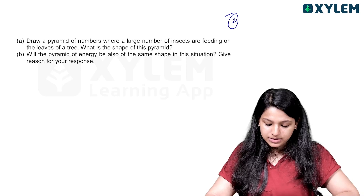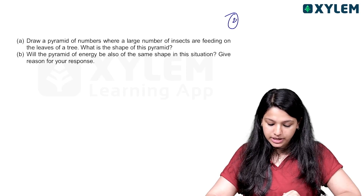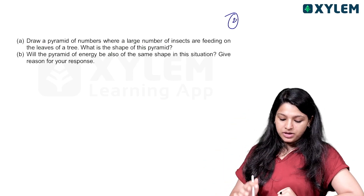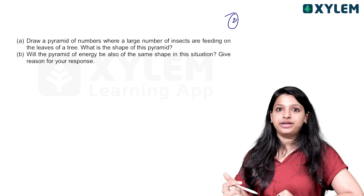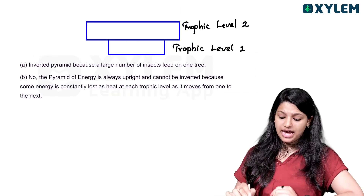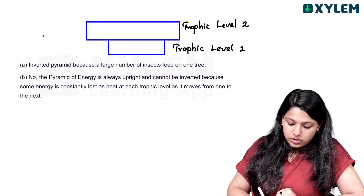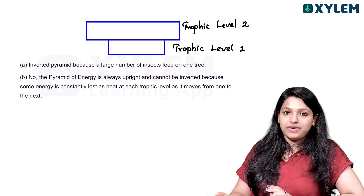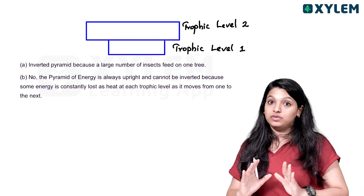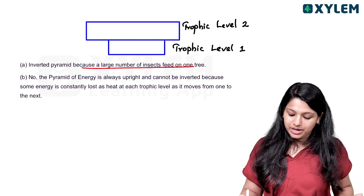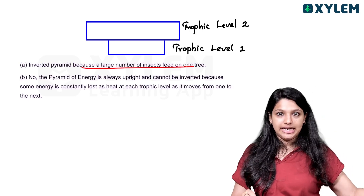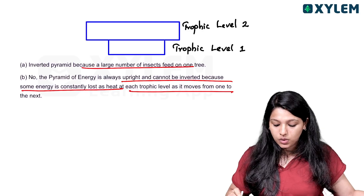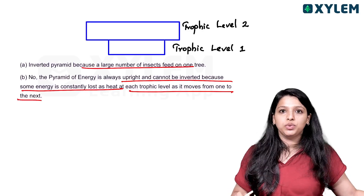Draw a pyramid of numbers where a large number of insects are feeding on the leaves of a tree. This forms an inverted pyramid because the insects outnumber the tree. Will the pyramid of energy also be the same shape? No — the pyramid of energy is always upright and cannot be inverted because some energy is constantly lost as heat at each trophic level as it moves from one level to the next.